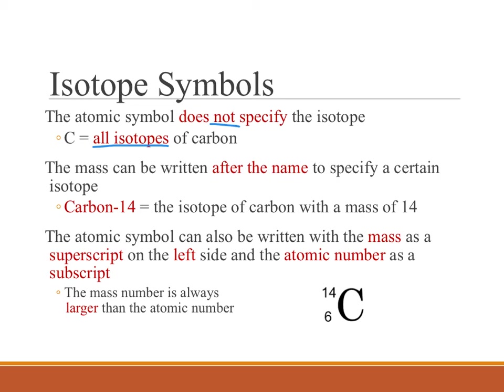To specify a certain isotope, we can write the mass after the name, as you saw on the previous slide. For example, carbon-14 is the isotope of carbon with a mass of 14, which by subtracting the six protons from 14, you end up with eight neutrons.